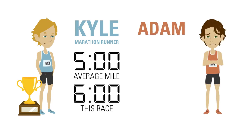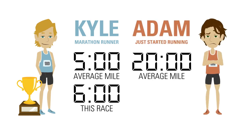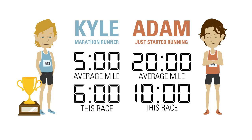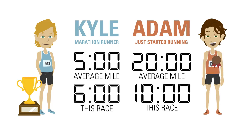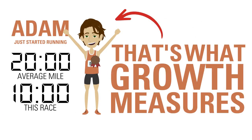Adam, on the other hand, just started running and was expected to walk the race in 20 minutes, like he did in previous races. Instead, he ran the mile in 10 minutes. He still lost the race, but for an inexperienced runner, he did far better than was expected. And that's what growth measures.